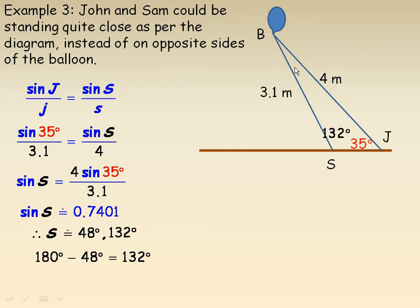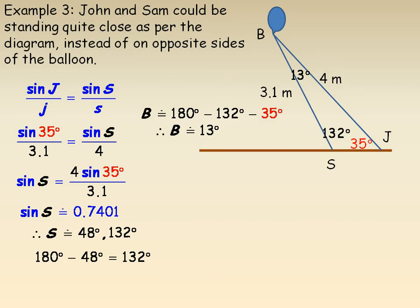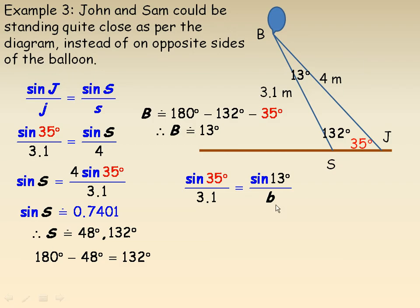So what changes is the rest of the problem. In order to find angle B, we subtract 132 and 35 from 180, and angle B is quite small — it works out to be 13 degrees. Now we write out the sine law to find side B. What's different here is that this angle isn't the 97 from the previous page; it's 13 degrees. So the sine of 35 over 3.1 equals sine 13 over its opposite side, the B side.